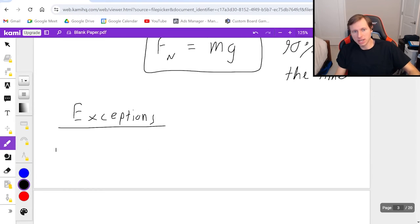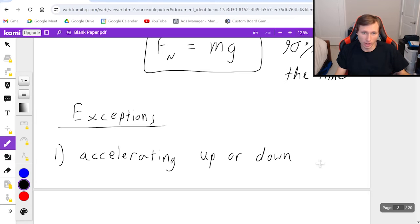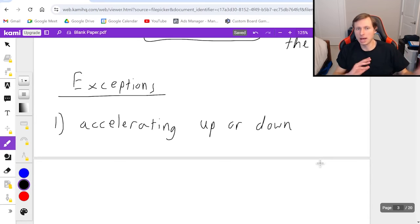So the first exception is if you're accelerating up or down. If you're accelerating up or down, that's going to change Newton's second law. It's not zero anymore. And the normal force will not be equal to MG. It will either be greater than or less than MG. A classic example of this is the elevator problem. In an elevator problem, your normal force is not equal to your force of gravity unless you're moving at constant speed, but I'm not going to get into that right now.